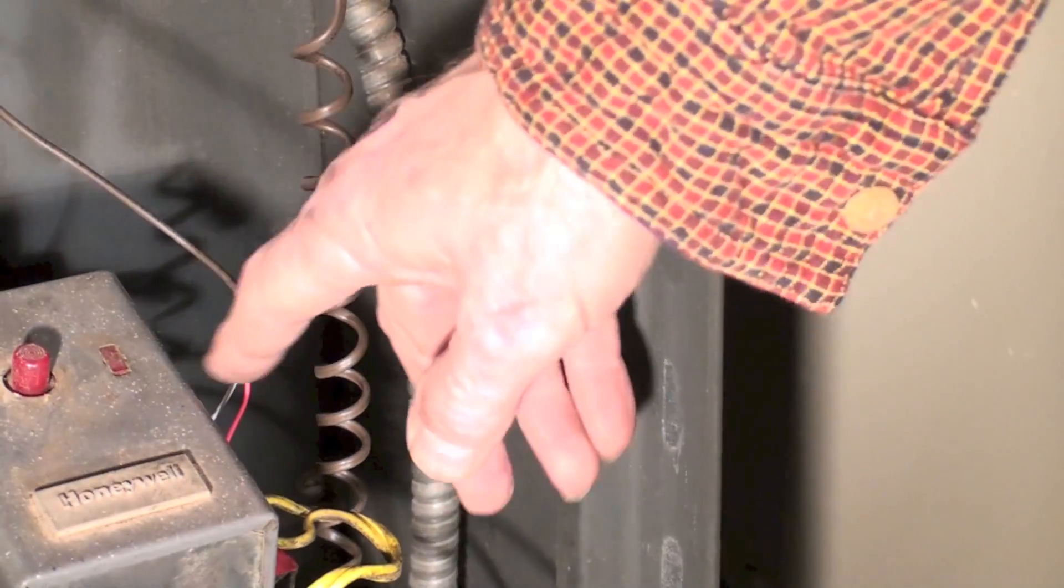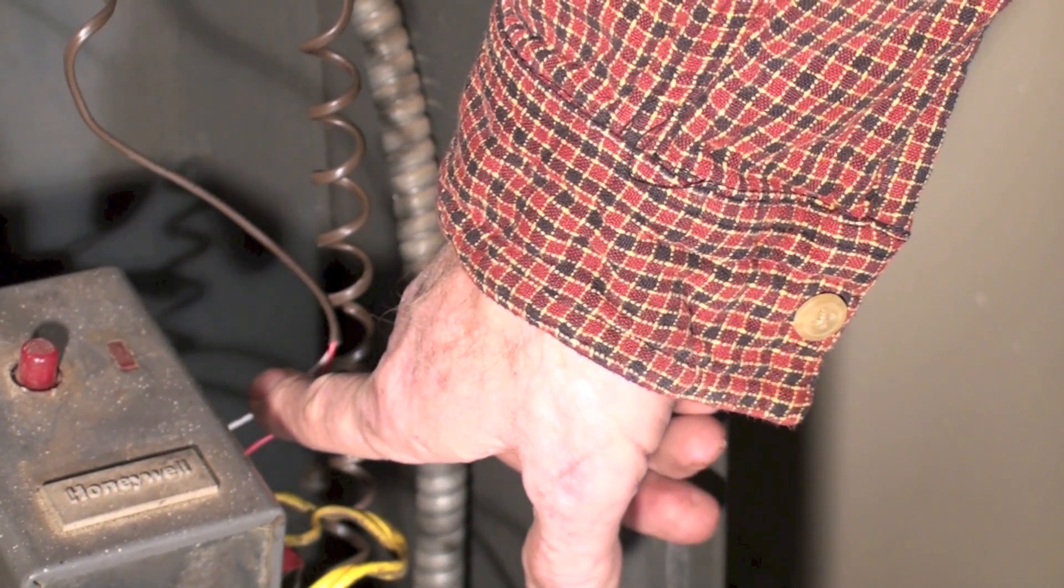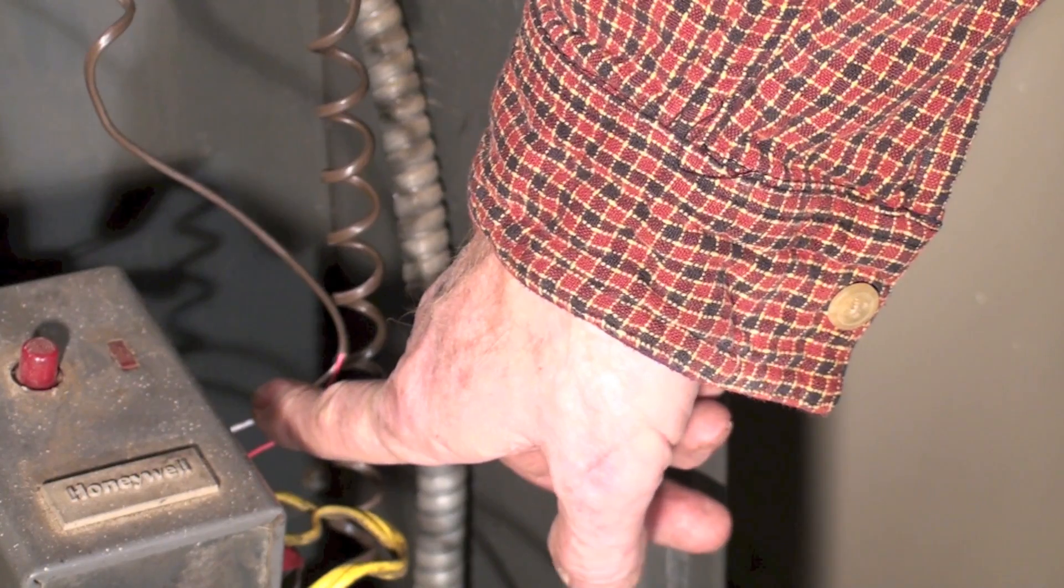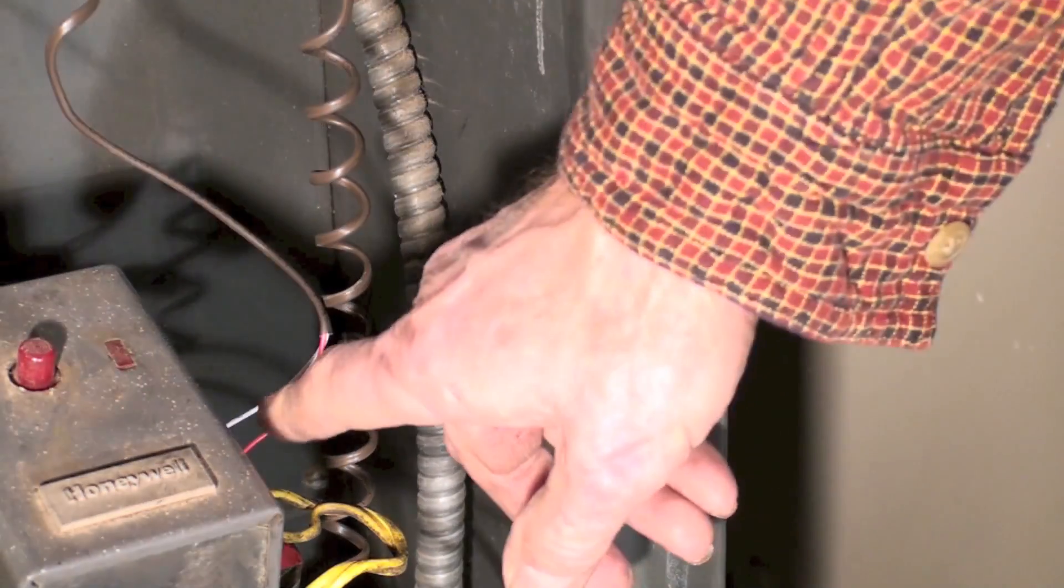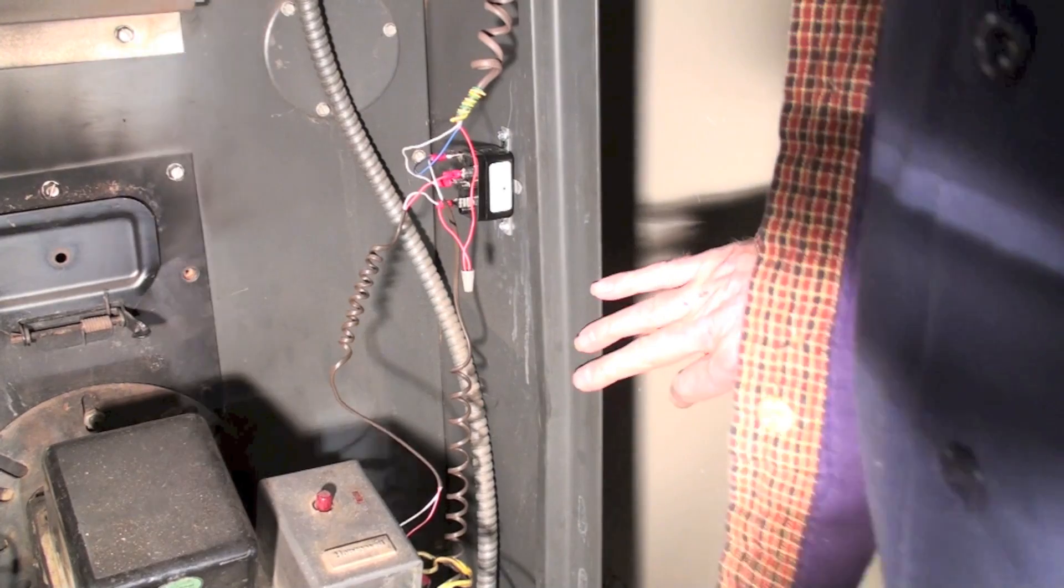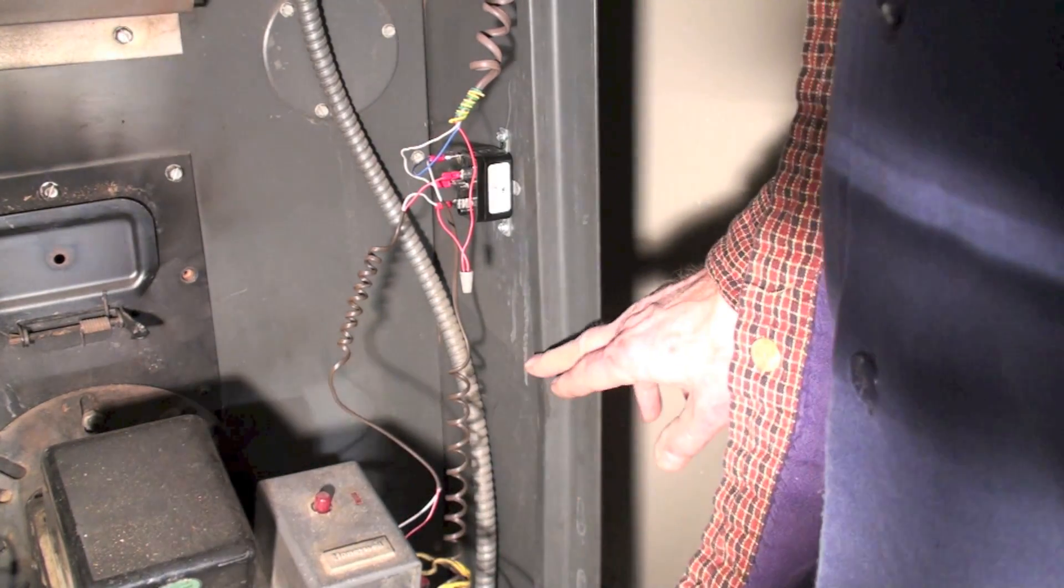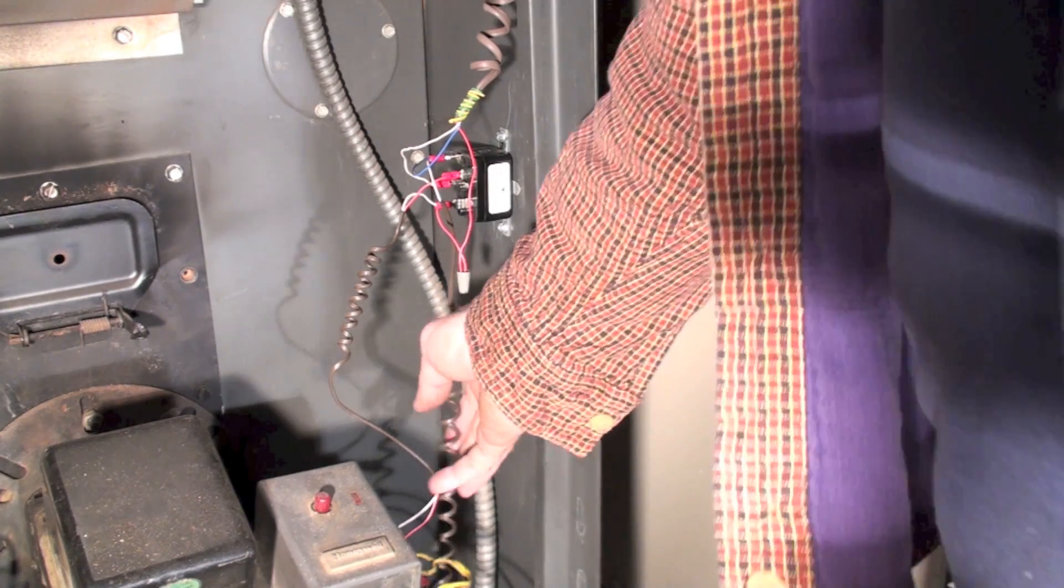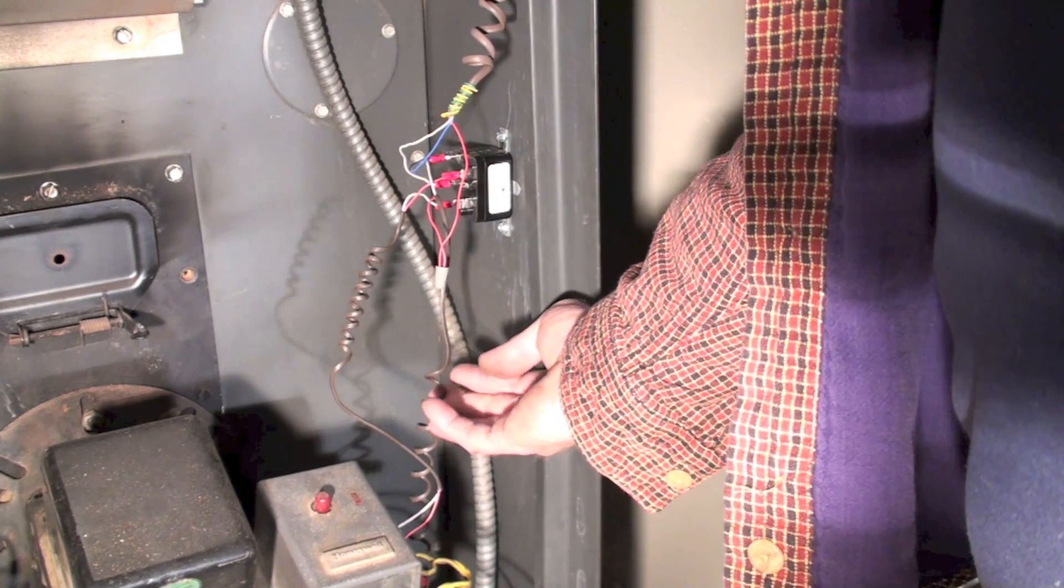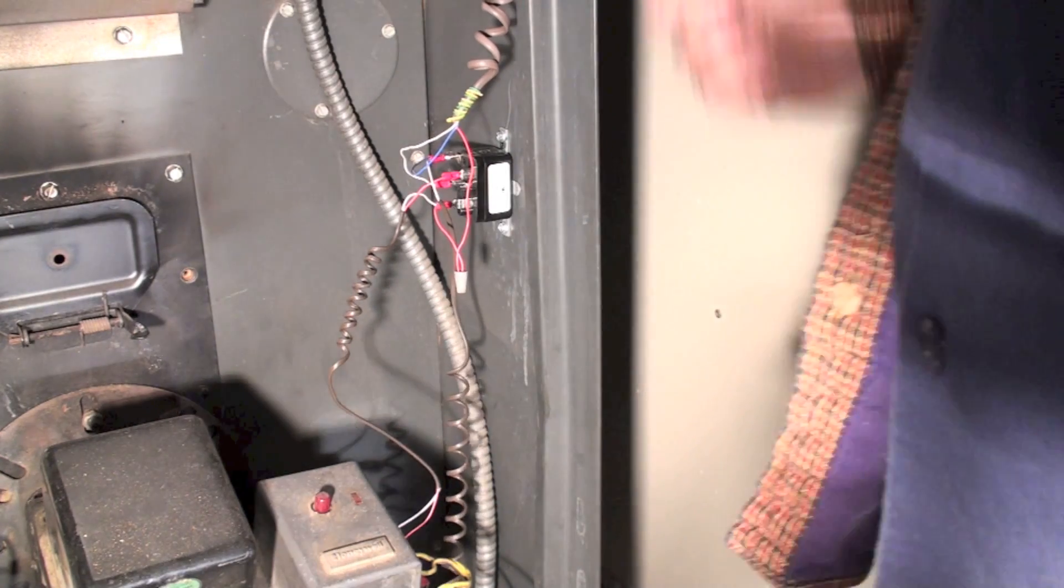When the relay energizes, that closes between two and four on this relay, which goes down to the TT terminals on the cad cell relay. So this completely isolates the cad cell relay, which is down here, from the transformer.